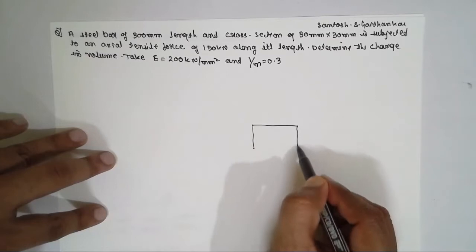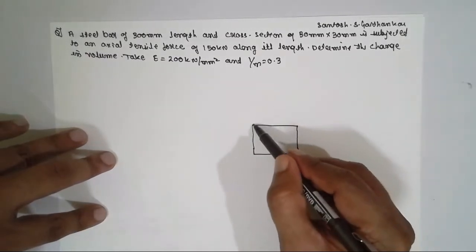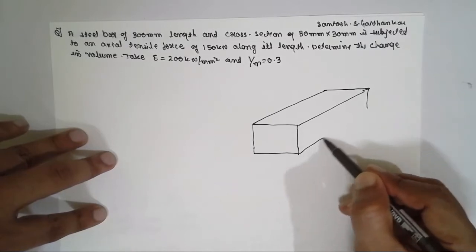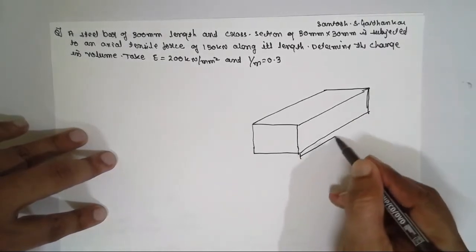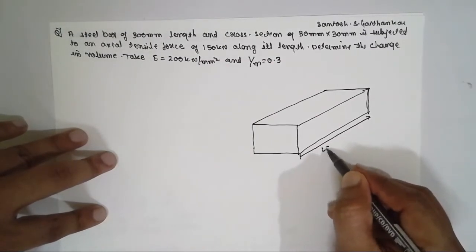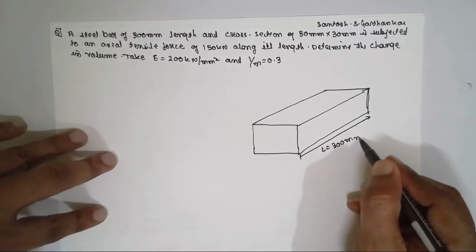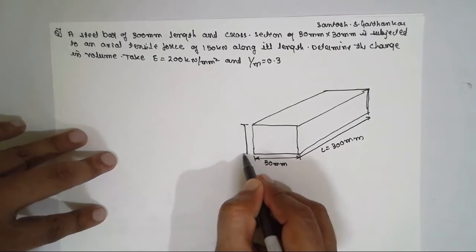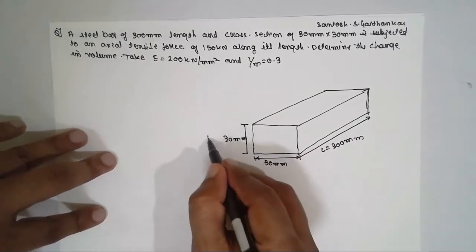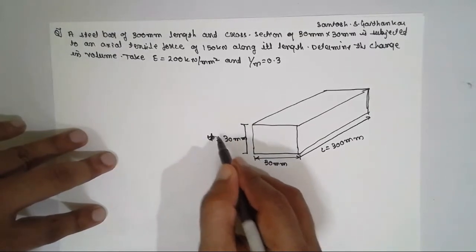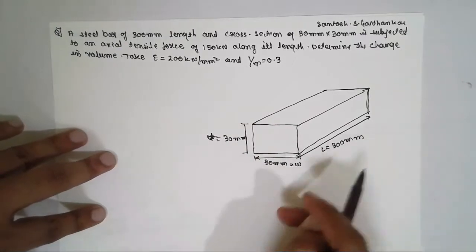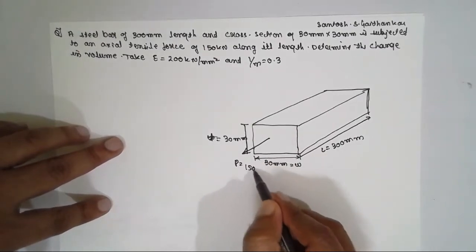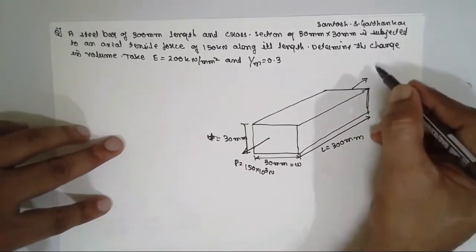A rectangular bar is given with length L = 300mm and cross-section area 30mm × 30mm — 30mm thickness and 30mm width. This one has a thickness, this one has a width, and this is the length. Tensile force P = 150 × 10³ Newton is applied.